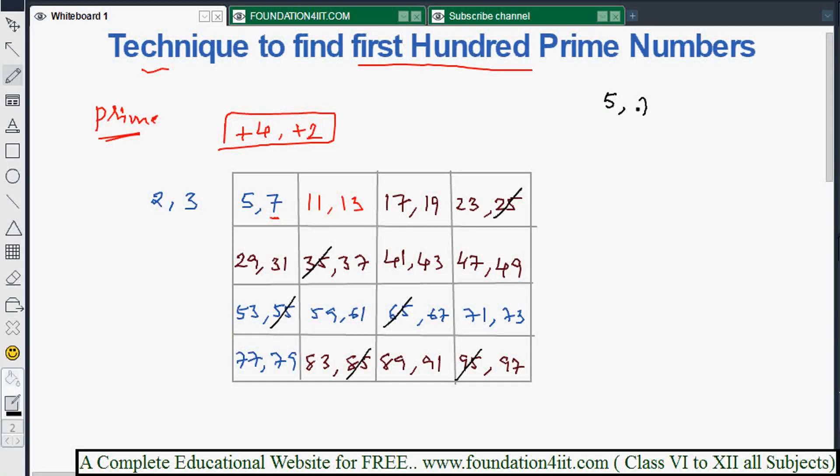The 7 multiples remaining in our grid are 49, 77, and 91. Strike those out. Now after striking out all the multiples of 5 and 7, the remaining numbers are all prime numbers.